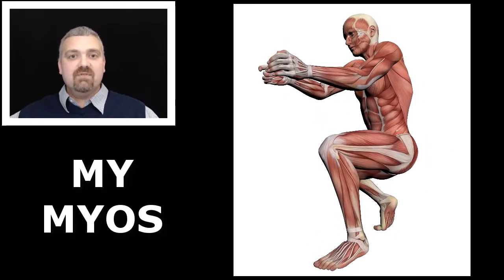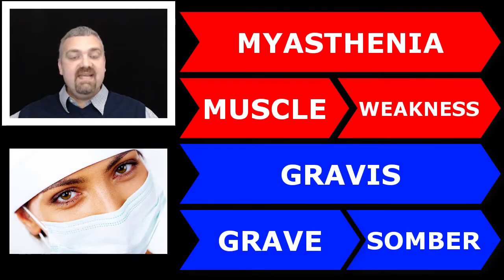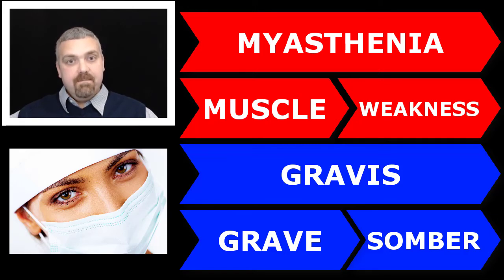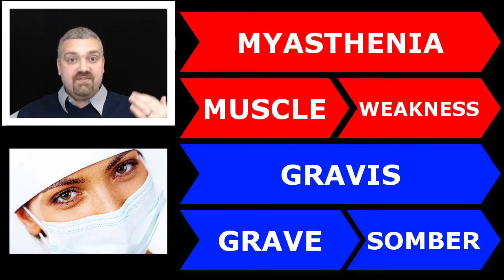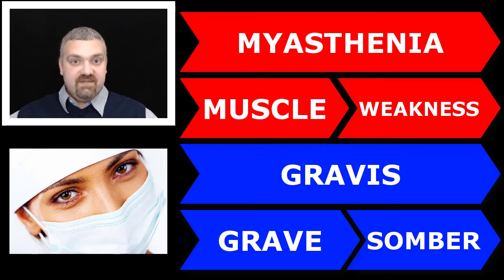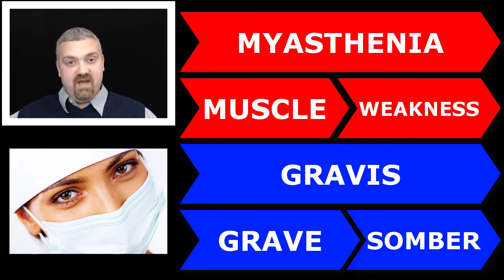My and myos also mean muscle. Think myasthenia gravis — 'my' means muscle, asthenia means a lack of strength, and gravis is a grave or somber condition. So myasthenia gravis is a condition where you lose muscle strength. It may start with a droopy eyelid because there isn't enough of the neurotransmitter acetylcholine to keep the eyelid muscles contracting.